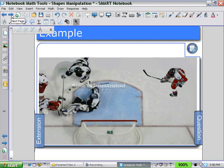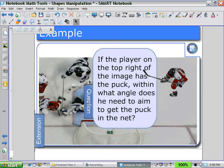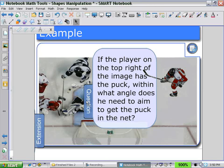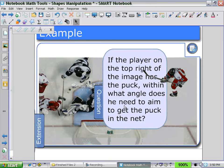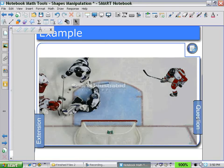Now let's look at an example how this may be used. If the player in the top right of the image has the puck, what angle does he need to aim to get the puck in the net? So using our irregular polygons tool, we can create a triangle to show that situation.